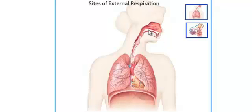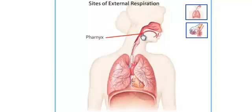Our secondary pathway for air is our mouth, and we can breathe through our mouth if we need to. Where the nasal cavity and the mouth cavity meet, that's called our pharynx. The pharynx is basically another word for the throat. That's where the air, the liquids, and solids that we eat all meet and mix together and move down on through.